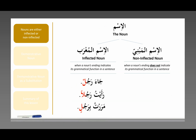Here is a quick reminder. Nouns — what we call the ism — are either inflected or non-inflected. Inflected is al-mu'rab. This means that the noun's ending indicates its grammatical function in a sentence. Jaa'a rajulun — a man arrived. Ra'aytu rajulan — I saw a man. If the word rajul is performing the action, double dammah — halat al-raf', the nominative case. If the action is being done to the man, ra'aytu rajulan — double fatha — halat al-nasb, the accusative case.